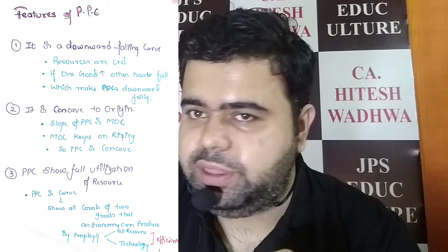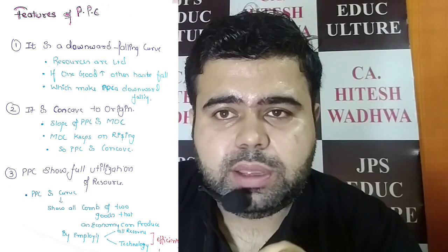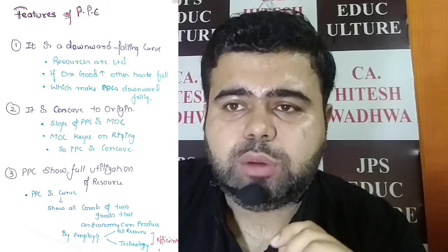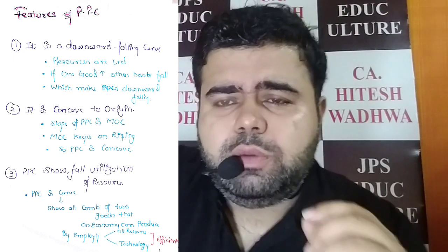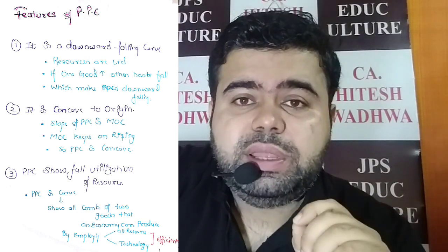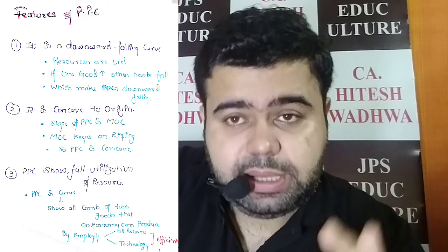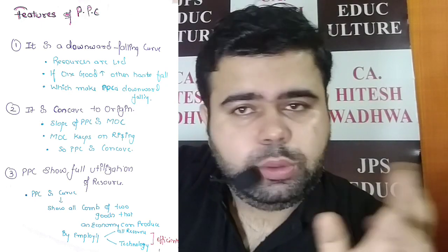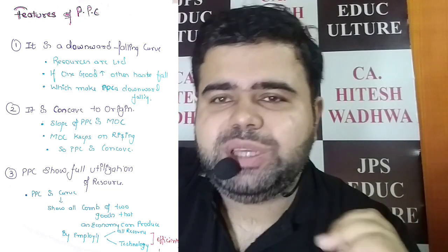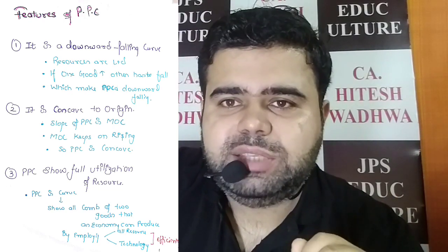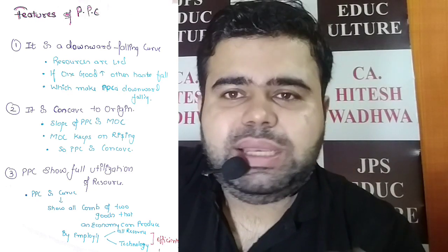Production Possibility Curve के बच्चो तीन Features हैं, books में आपको generally दो मिलेंगे. पहला Feature होता है — it is a downward falling curve. ये downward falling curve इसलिए है, because ये economy के सारे resources लगा के, अगर हम दो goods बना रहे हैं, तो उनकी graphical representation show करता है. अगर हम एक good की production बढ़ा रहे हैं, तो दूसरे good की production कम हो जाएगी, क्योंकि resources limited हैं. इसलिए ये downward falling होते हैं.